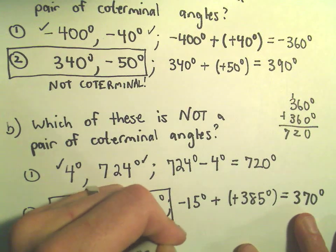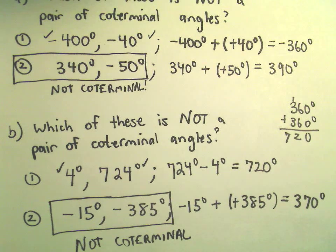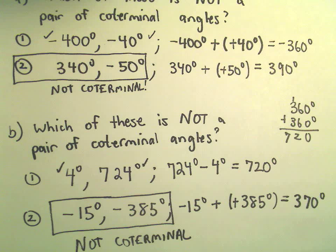So all you're doing is basically subtracting them and looking for multiples of 360. If it is a multiple of 360, they are coterminal. If it's not a multiple of 360, they're not coterminal.